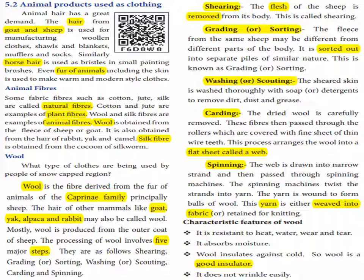The processing of wool involves 5 major steps: shearing, grading or sorting, washing, carding, and spinning.